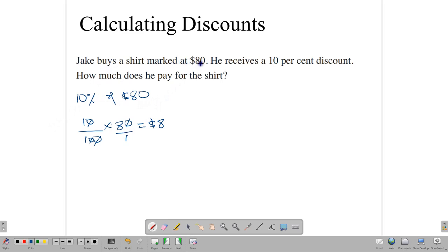So he buys a shirt marked at $80. So initially, it values $80. What he's going to get? A minus $8 at the cashier. And so he's going to end up paying $80 minus $8, which means that he's going to pay $72.